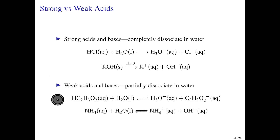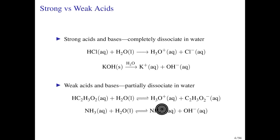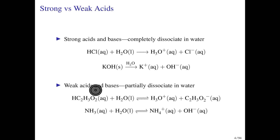We can also have acids and bases that only partially dissociate in water. The quintessential examples are acetic acid as a weak acid and ammonia as a weak base. Acetic acid donates a proton to water, giving us hydronium and leaving behind the acetate ion. Since these are weak acids and bases, we use the double-sided arrow to indicate that both reactants and products are present at equilibrium. In reality, only a small fraction actually dissociates — most of the acetic acid and ammonia remain in molecular form.